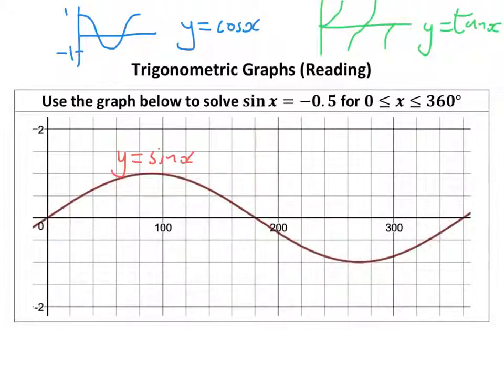It says use the graph below to solve sin x equals minus 0.5 for 0 ≤ x ≤ 360°. So between 0 and 360, well here's 0 there and there's 360 there. We've got to read off where the sin x graph is at minus 0.5 between those two points.